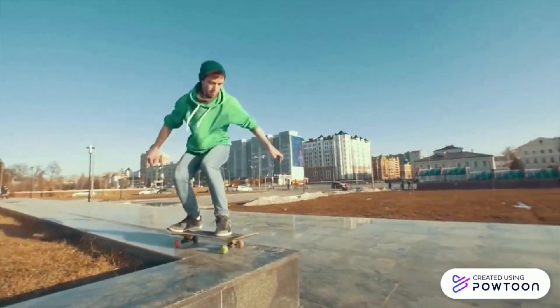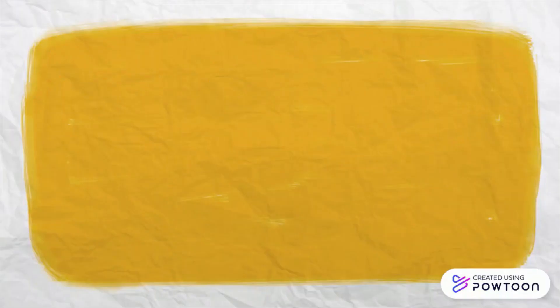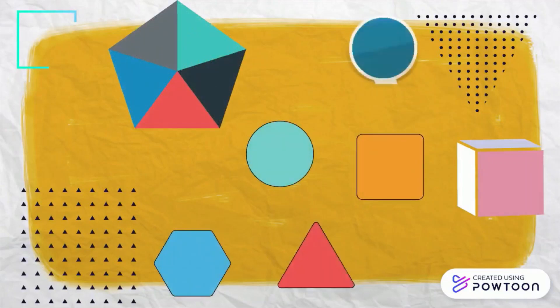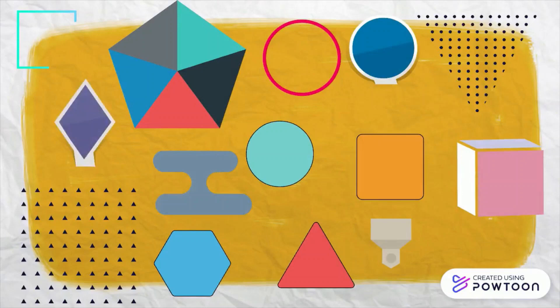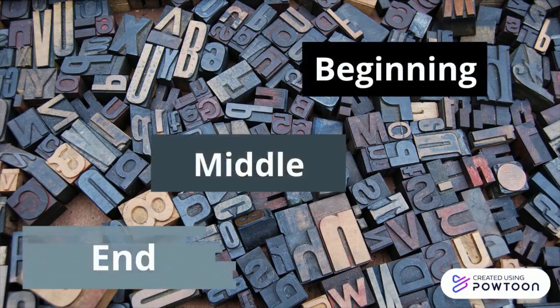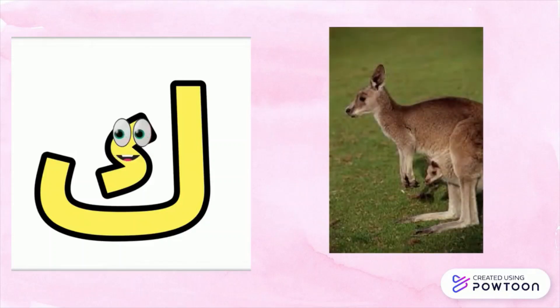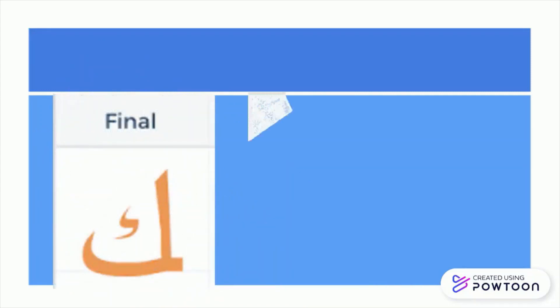The last letters to come out of the bus were the tricky letters. They're tricky because they have different shapes depending on where they are — by themselves, at the beginning, in the middle, or at the end. The nice thing about the letter kaf is that it is always holding its little kaf in its tummy — like a kangaroo holding its baby.